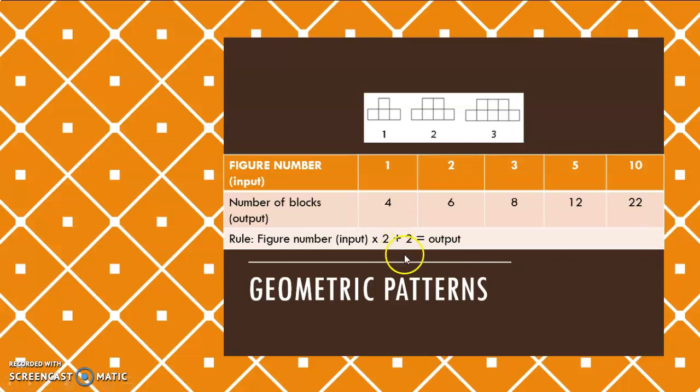I will say 42, subtract 2, will give me 40, and then divide by 2, will give me 20. So, my input value will be 20, if my output value or number of blocks is 42.